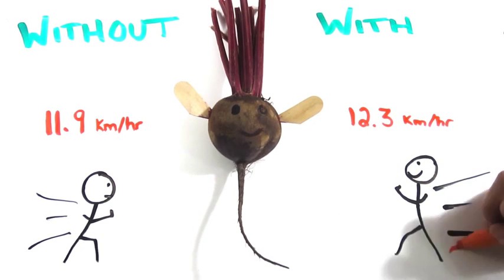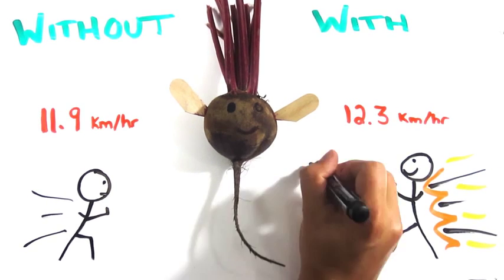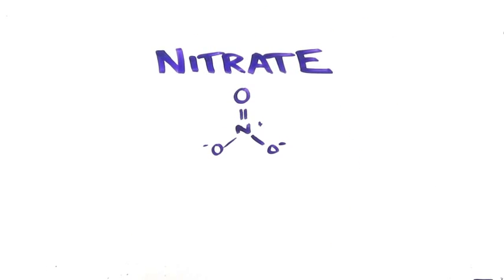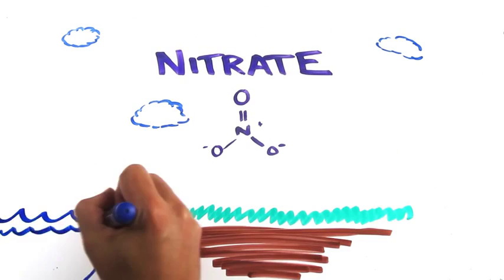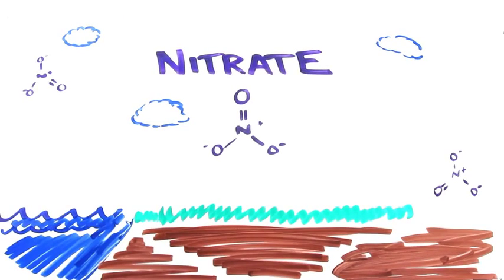How can eating such a small vegetable garner such a significant effect? Scientists believe the answer lies within the concentration of a molecule called nitrate. Nitrates can be found in the air, soil, and water, and are an essential component for plant growth.